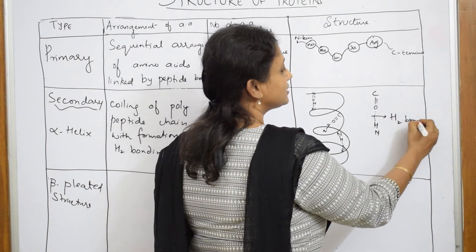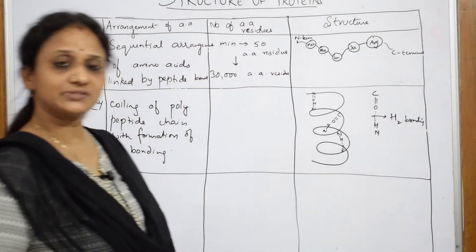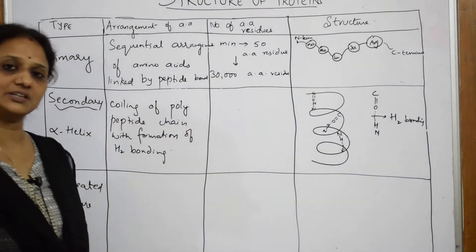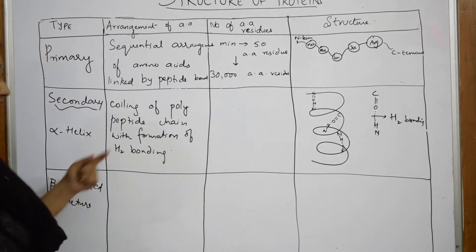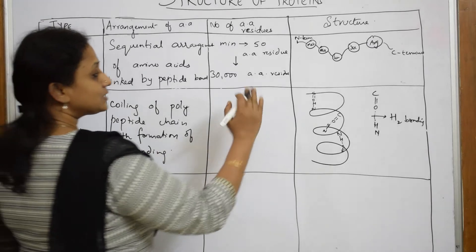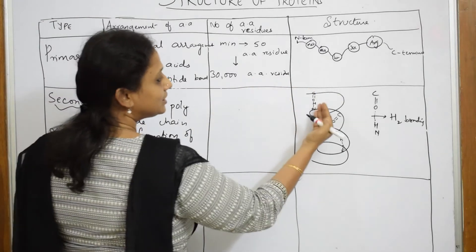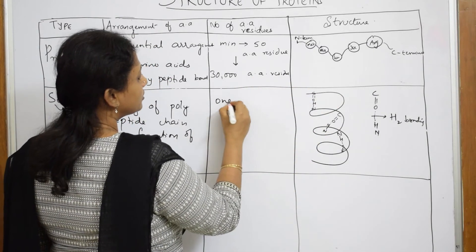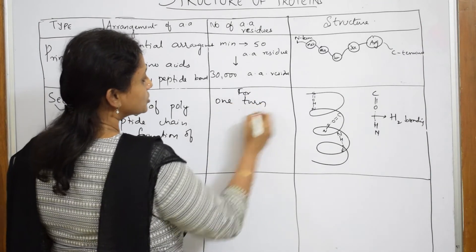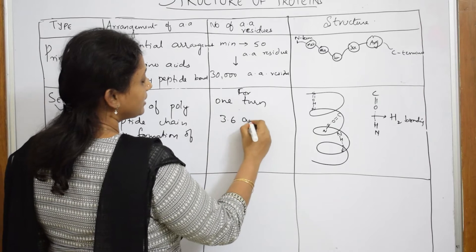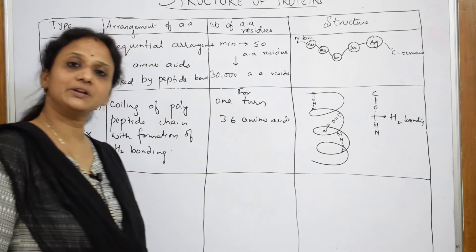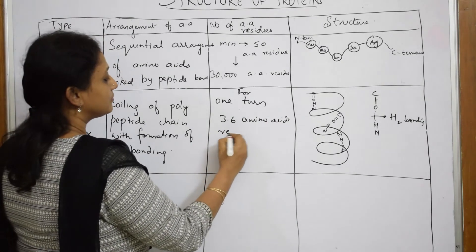This hydrogen bonding gives strength to the molecule and maintains the coiled structure. For one turn of the alpha helix, 3.6 amino acid residues are observed.